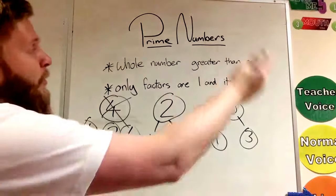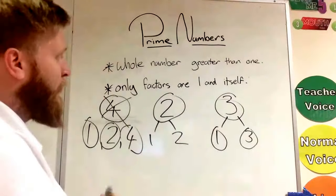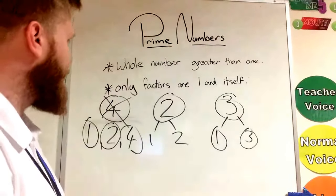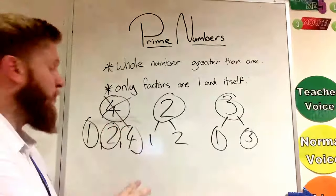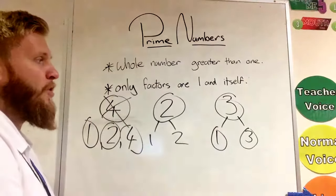Now we could go on and keep going up to all the prime numbers. But I think you get the picture there. Numbers that aren't prime, just in case you're wondering, we call those composite numbers. So 4 would be a composite number, not a prime number.